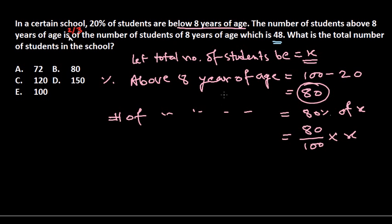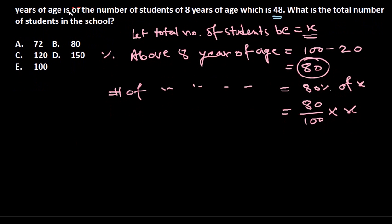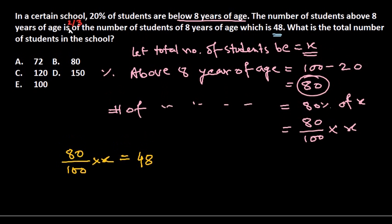There is no difficult math in this part — we are just organizing it according to the mathematical formula. They told us the number of students above eight years of age is two-thirds of the number of students of eight years of age. The number of students of eight years of age is 48, and this value — 80x/100 — equals two-thirds of 48, plus 48 itself.